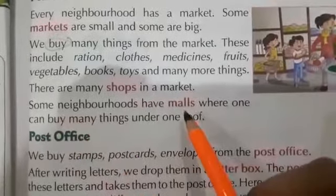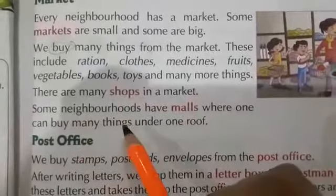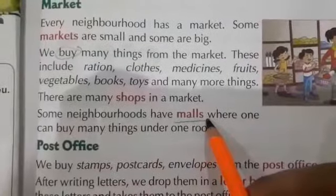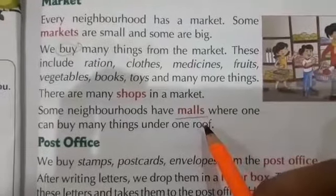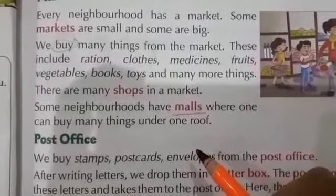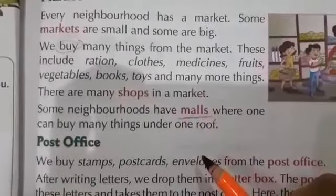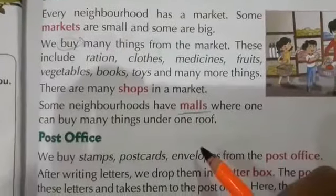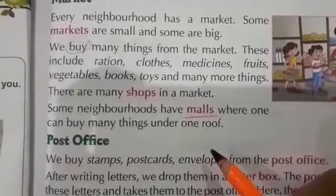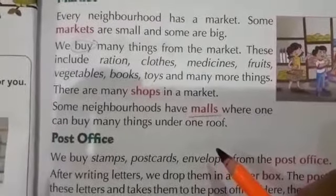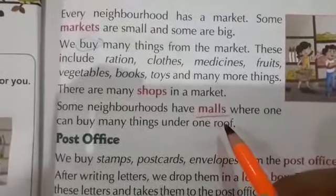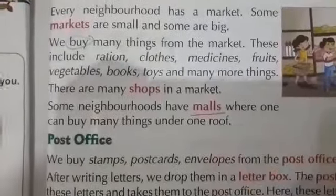Some neighborhoods have malls where one can buy many things under one roof. Malls ज़्यादातर cities के अंदर होती हैं. Mall में क्या होता है — सारी shops एक ही building में होती हैं, तो आपको easy होता है. जब आपको different variety of things buy करनी होती हैं, तो आप सिर्फ mall में जाते हैं और वहाँ से सारा सामान ले आते हैं. आपको किसी चीज़ के लिए कहीं और नहीं जाना पड़ता — under one roof, एक ही छत के नीचे हम सारा सामान खरीद सकते हैं.